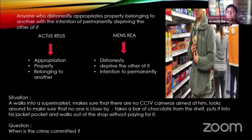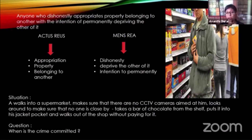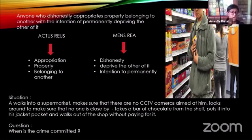A walks into a supermarket. He looks around to make sure there is no CCTV camera aimed at him, that nobody is watching him. He makes sure his back is turned to anyone there. He takes a bar of chocolate from the shelf, puts it in his jacket pocket, and walks out of the shop without paying for it. This is very simple — this is stealing. You take a bar of chocolate and walk out of the supermarket without paying. That is stealing.